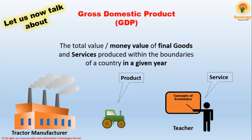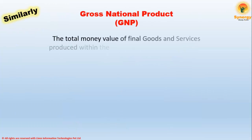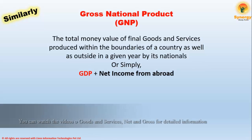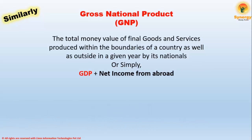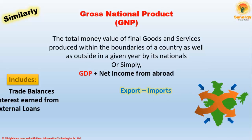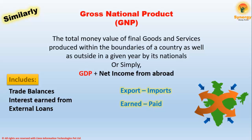GDP tells us what is happening at the whole country level. Similarly, we have GNP — gross national product — the total money value of final goods and services produced within the boundaries of a country as well as outside in a given year by its nationals. It can simply be represented by the formula: GDP plus net income from abroad, where 'net' means after necessary deductions.